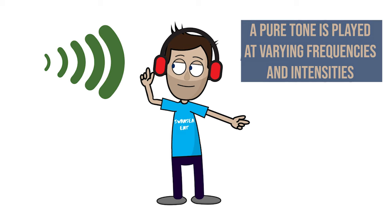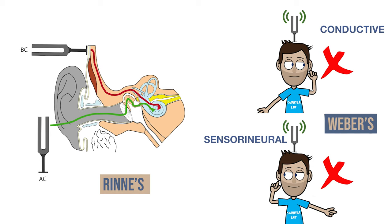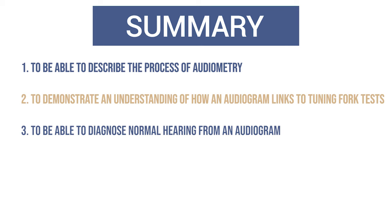At the start of this video, we set out five objectives. Firstly, to describe the process of audiometry. Audiometry is done by playing pure tone sounds of different intensities and frequencies, and recording which the patient can hear. The second was to demonstrate how audiograms are linked to tuning fork tests. Rinne's and Weber's are bedside tests, and although both measure air and bone conduction, audiograms alter the frequency and intensity, and take more consideration of global hearing loss. They can be diagnostic in themselves.